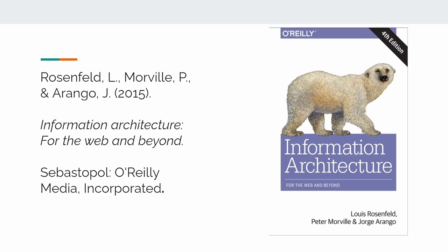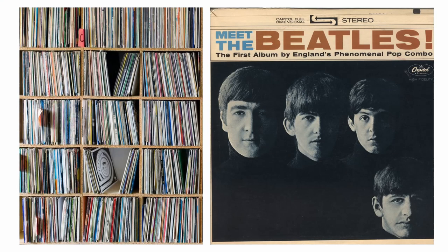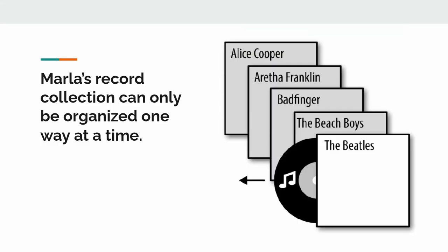The Polar Bear book starts with a great example of how interactions with information can change over time. It introduces us to Marla and her son Mario. Marla has an extensive record collection. When she wants to listen to some music, she goes over to her meticulously organized shelves, which are organized alphabetically. When she wants to listen to the Beatles, she goes to the B section and finds it quite quickly. Marla's record collection is an example of a one-to-one relationship with the information artifacts she has.